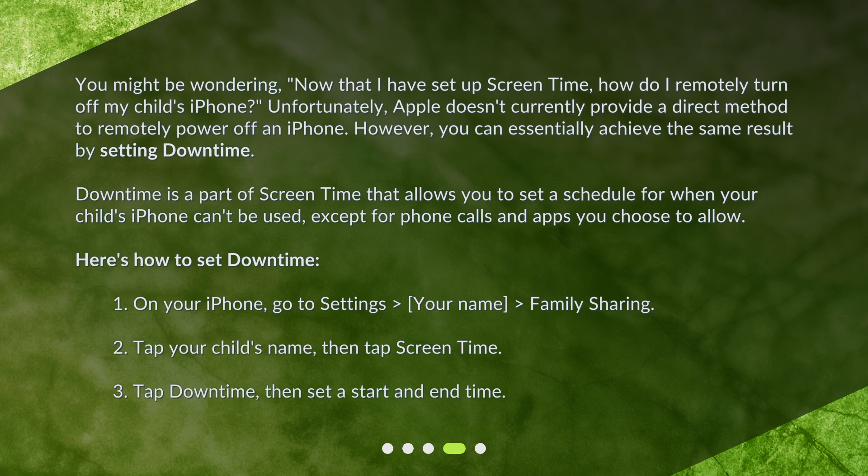Here's how to set Downtime. One: on your iPhone, go to Settings, then your name, then Family Sharing. Two: tap your child's name, then tap Screen Time. Three: tap Downtime, then set a start and end time.